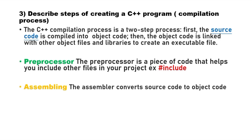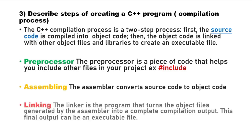Assemblers convert the source code to object code. Assembling is a process. The linker is a program that takes the object files generated by the assembler into a complete code.